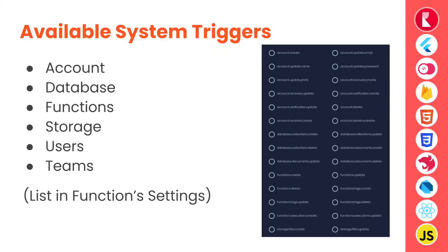What are the available system triggers? All the different services in AppWrite trigger different events. For example, the account service triggers events like account.create, account.update.email, account.update.name, account.update.password, and similar events. Similarly, database, storage, users, and teams services have their own events. You can select any of those events to trigger a cloud function — for example, on account.create we could run a function that automatically sends welcome emails to users. All available events can be found in the functions settings tab.